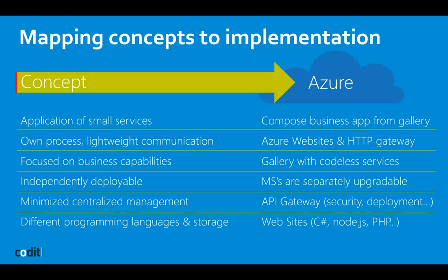It's focused on business capabilities, and I have a little demo later. They'll have a gallery with codeless services that you can compose into your own things. Microservices will be separately and independently upgradable. The centralized management is the API gateway — I'll dive deeper into that later. You can compare it with the message box or messaging agent from BizTalk. And for programming languages, that's the website support — you can deploy websites in Node.js, PHP, C#, the language of your choice.